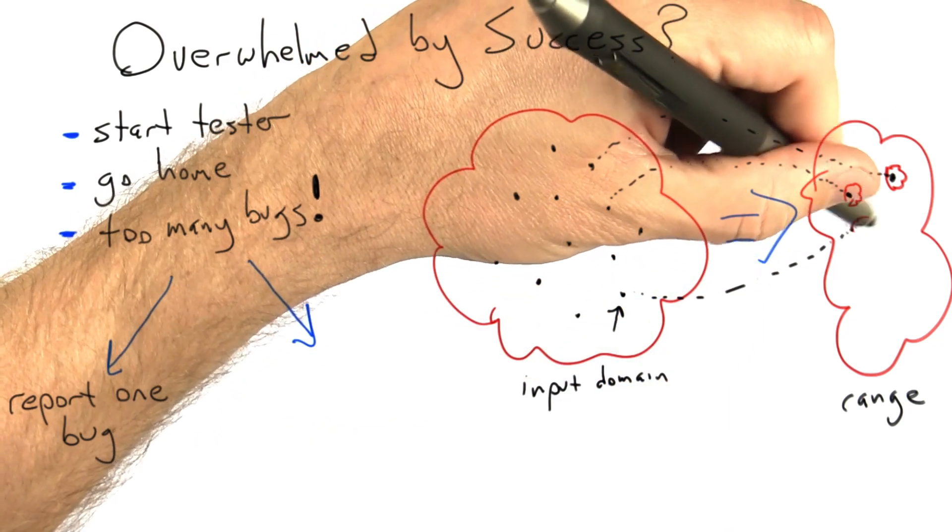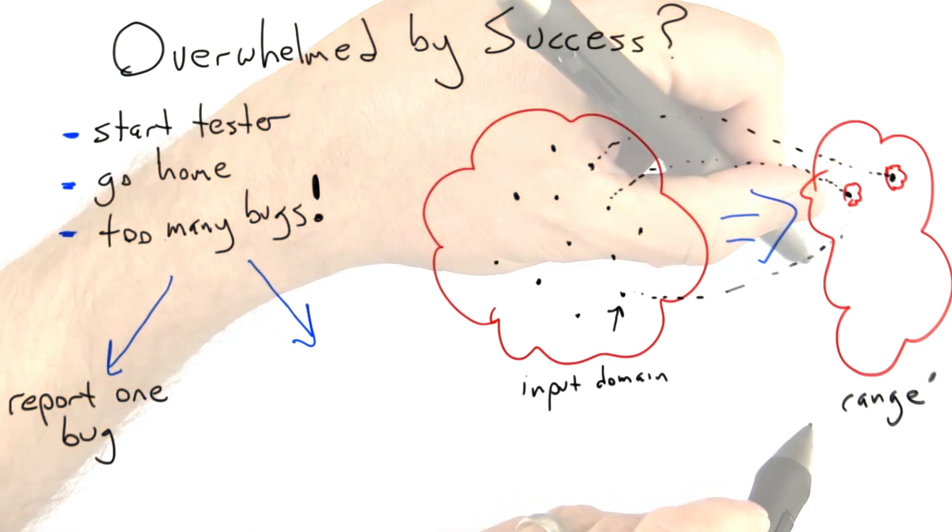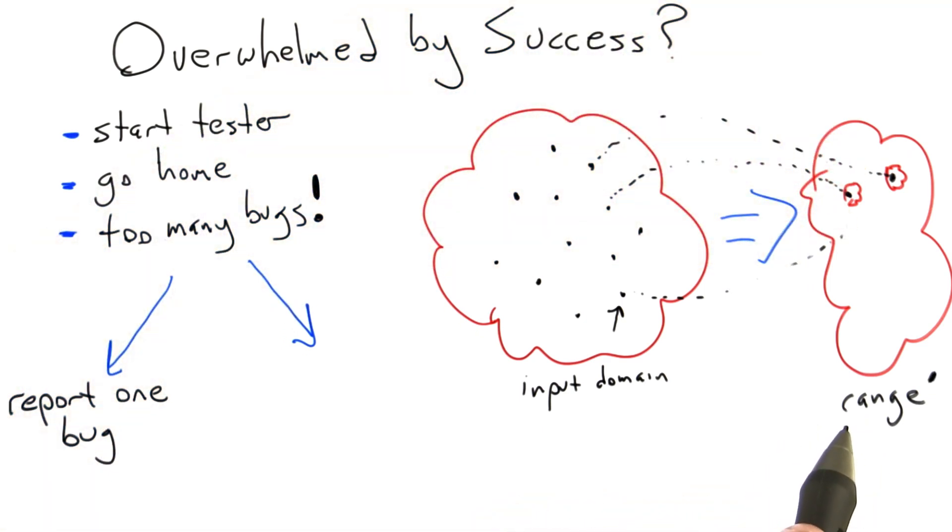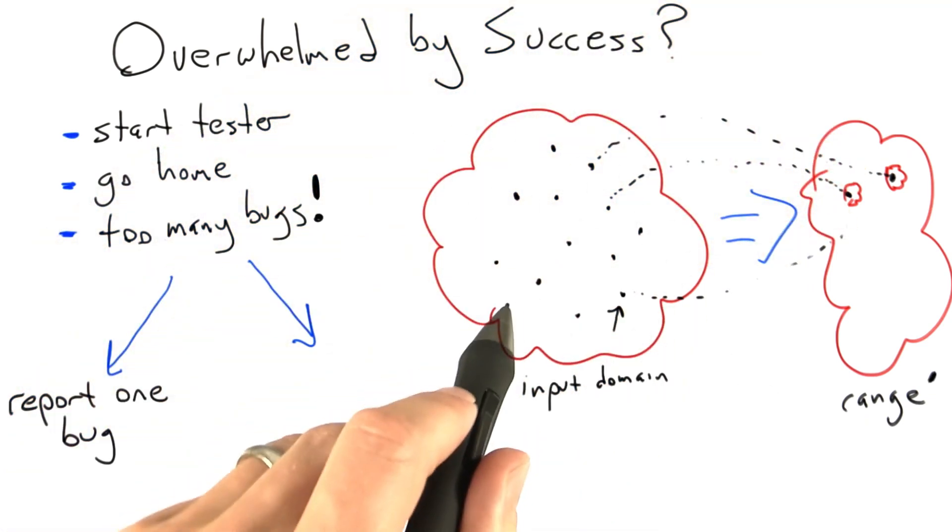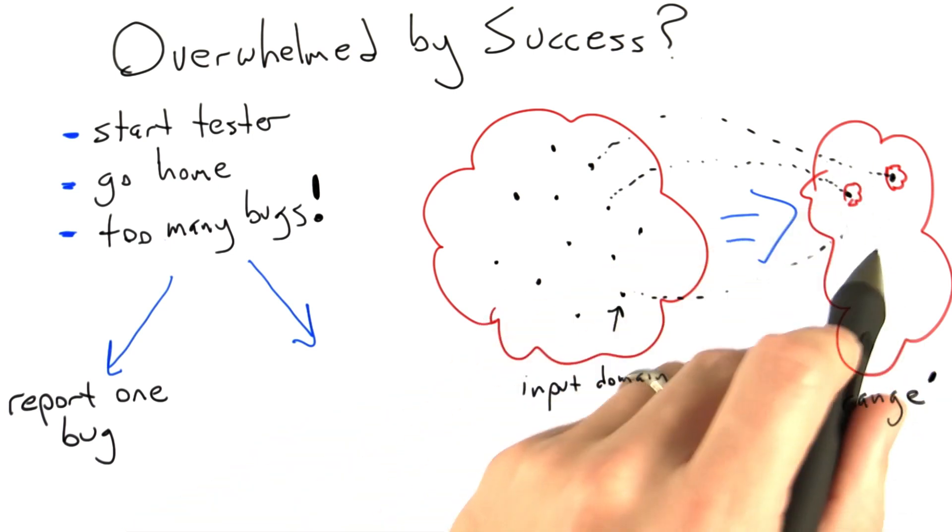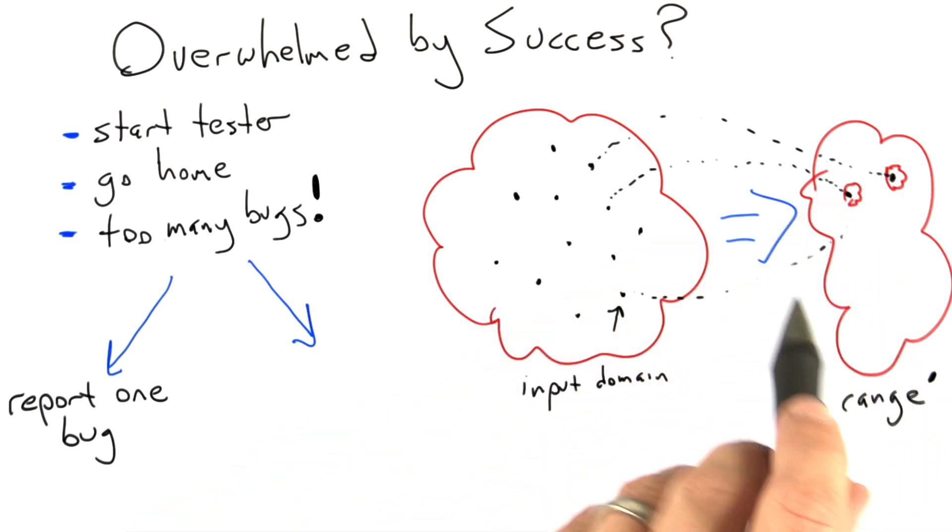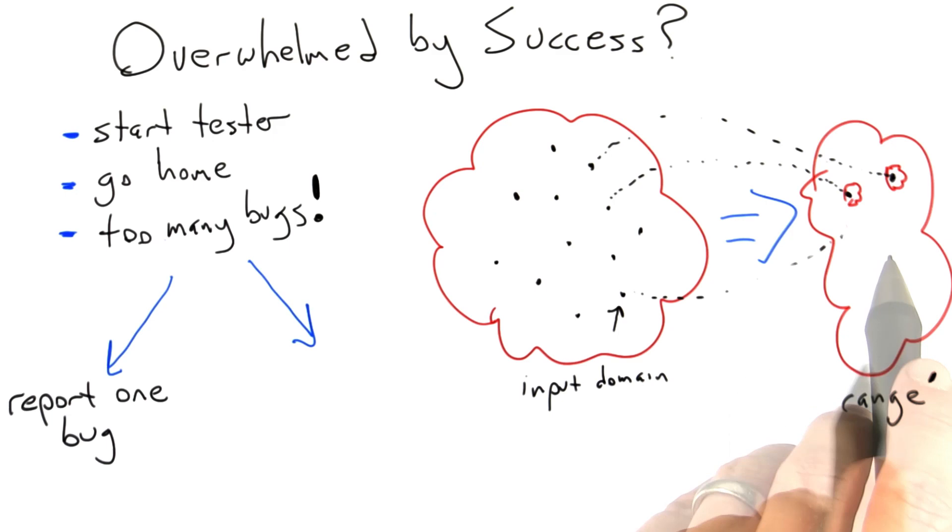So this buggy part of the output space goes away in the next version of the system. Now we don't have range of the system, we have range prime, which is just the range of the next version. We still have exactly the same input space, and the behavior of the software under test has changed a little bit. Now something interesting happens.